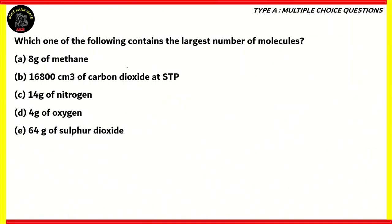Let's look at another question. Which one of the following contains the largest number of molecules? The options are: (A) 8 grams of methane, (B) 16,800 cm³ of carbon dioxide at STP, (C) 14 grams of nitrogen, (D) 4 grams of oxygen, (E) 64 grams of sulfur dioxide.